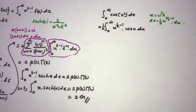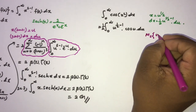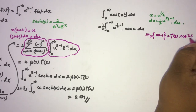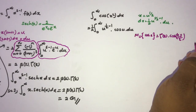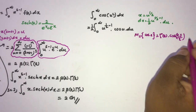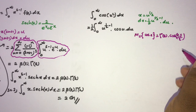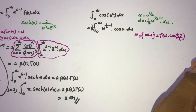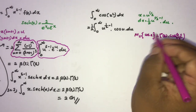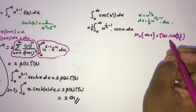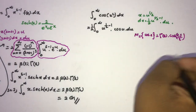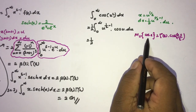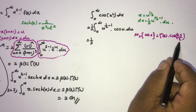We know the Mellin transform of cos(x) is given by Γ(s) cos(πs/2). This is the Mellin transform of cosine — if you want a separate video proving this, please comment below. We evaluated the Mellin transform of sine in a previous video. Applying this formula here with s = 1/2, we get (1/2) times Γ(1/2) cos(π/4).